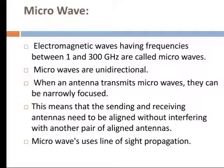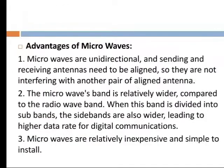Microwave: Electromagnetic waves having a frequency between 1 GHz and 300 GHz are called microwaves. Microwaves are unidirectional — when an antenna transmits microwaves, they can be narrowly focused. This means that the sending and receiving antennas need to be aligned without interfering with another pair of aligned antennas. The microwave band is relatively wider compared to the radio wave band, and when divided into sub-bands, those sub-bands are also wider, leading to higher data rates.